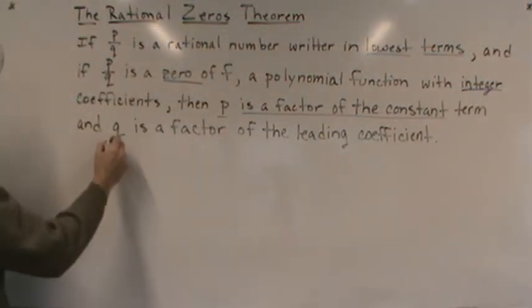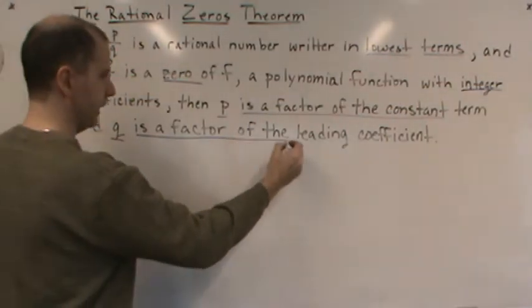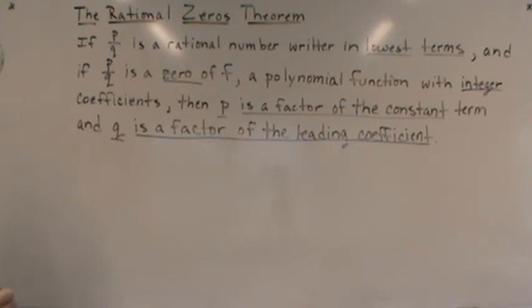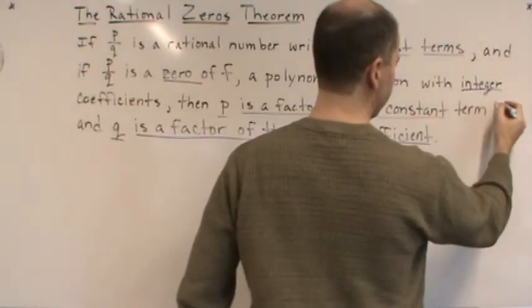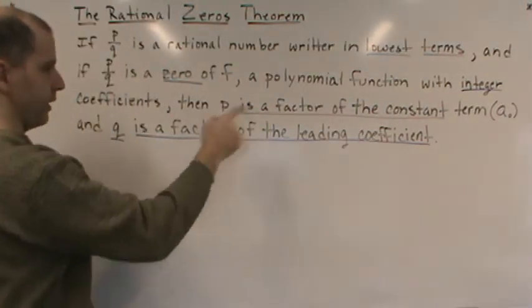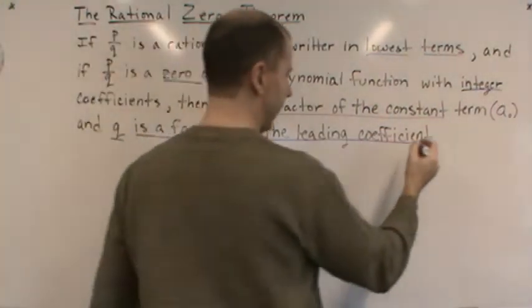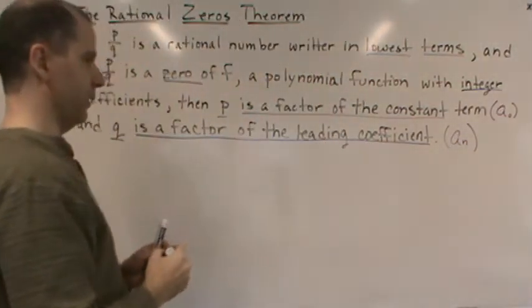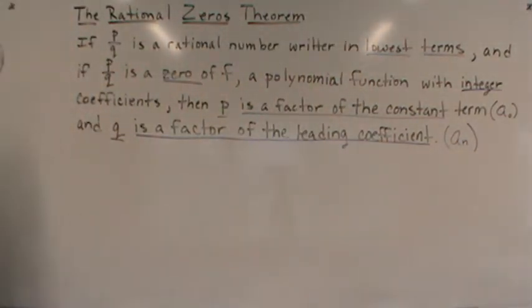and Q is a factor of the leading coefficient. In other words, this is A_0, so P is a factor of A_0, and Q is a factor of A_n, the leading coefficient.